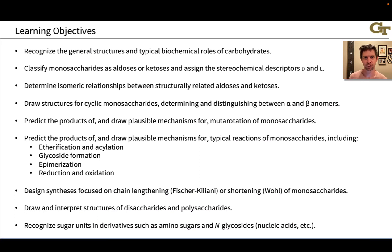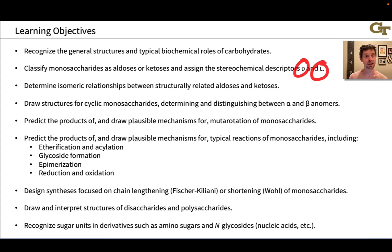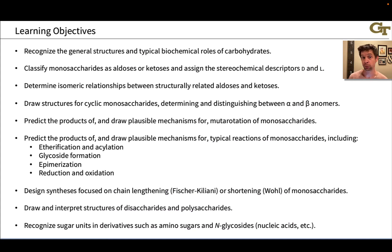You'll learn more about the specific biochemistry of carbohydrates in a biochemistry course later. We're going to learn how to classify monosaccharides as aldoses or ketoses — these prefixes indicate something about the structure of the sugar. We'll also learn how to classify sugars stereochemically and what the stereochemical descriptors D and L mean in the context of carbohydrates. These are biochemical stereochemical descriptors also used for amino acids, but we'll learn what D and L mean specifically for sugars. Then we'll look at isomeric relationships between structurally related aldoses and ketoses — for example, whether a given pair of sugars are diastereomers or enantiomers.